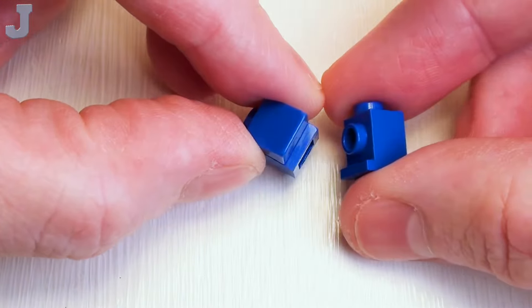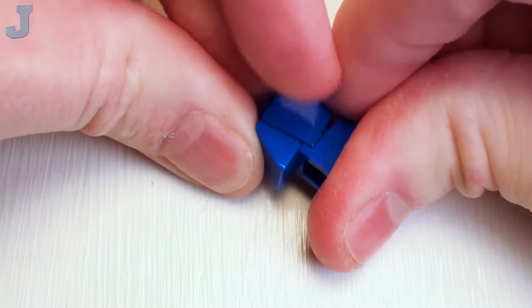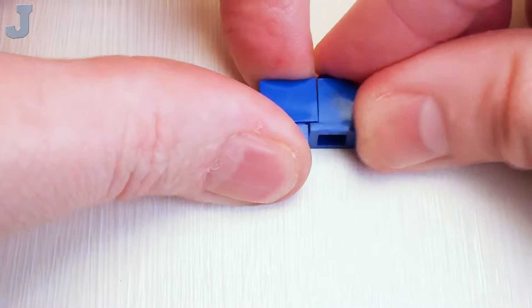And we're going to take a 1 by 1 angular headlight brick. Place it as shown. That's pressed down firm.